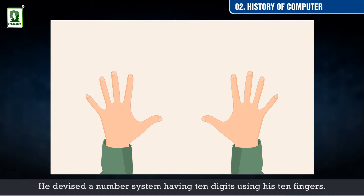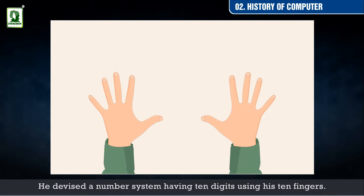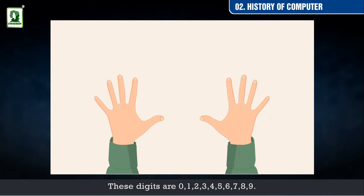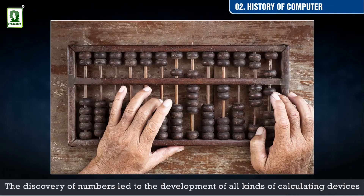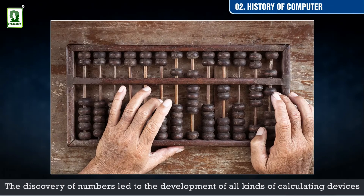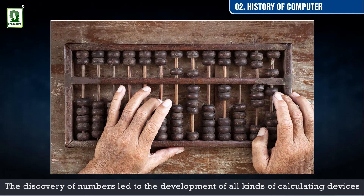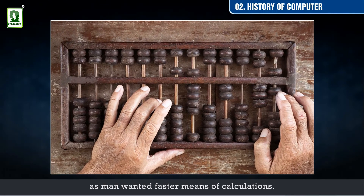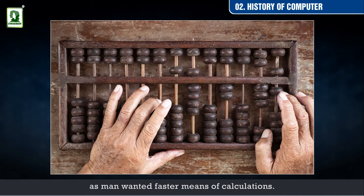He devised a number system having 10 digits using his 10 fingers. These digits are 0, 1, 2, 3, 4, 5, 6, 7, 8, 9. The discovery of numbers led to the development of all kinds of calculating devices, as man wanted faster means of calculations. So some people made a device to help in counting.